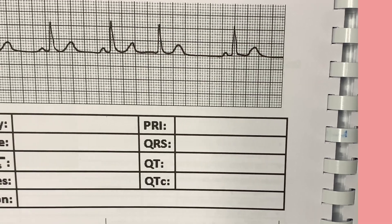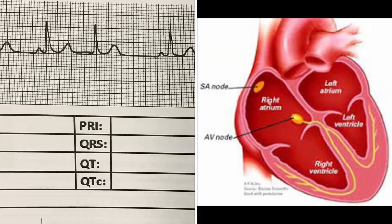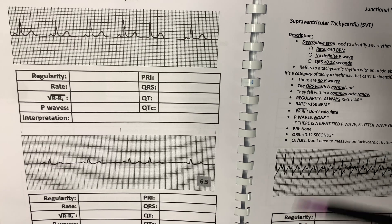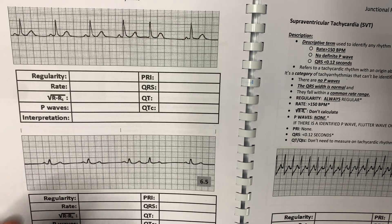As I stated, PJCs — premature junctional contractions — come from the AV node. The number one hallmark of identifying a PJC is the P wave, because the P wave is going to be inverted, which means upside down, or you won't be able to identify it at all.